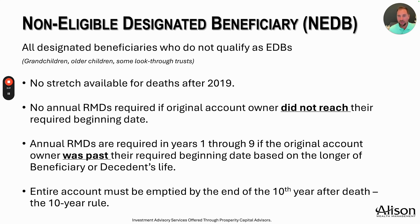If it's a Roth IRA you're inheriting, there are no required minimum distributions regardless of the original owner's age — one of the nice benefits of a Roth account. You can allow those investments to grow tax-free for another 10 years, but at the end of the 10th year, the Roth IRA must be depleted. If it's a Roth 401k, the final regulations stipulate that if part of the money was in Roth 401k and part in a traditional 401k, you do need to take distributions in those first 10 years. Missing those RMDs carries an enormous 25% penalty.